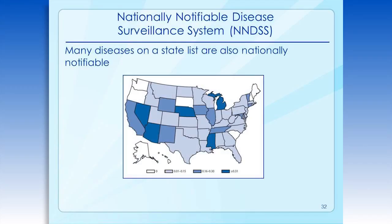States typically fully cooperate with national disease reporting because CDC publishes the provisional data weekly in the Morbidity and Mortality Weekly Report, or MMWR, and the final data is published annually in the MMWR Annual Summary of Notifiable Diseases. MMWR displays the data in complex tables and maps, allowing each state to know how their population's health compares with other states.